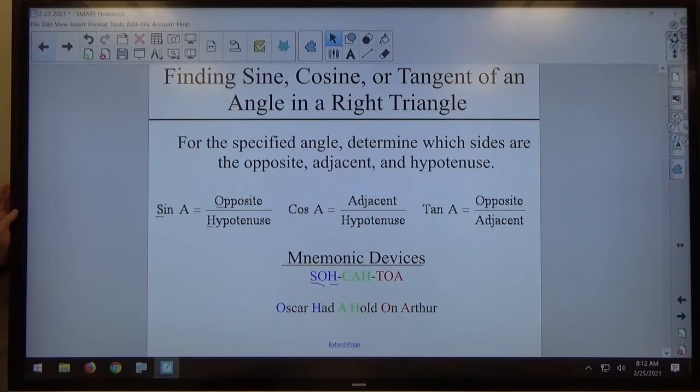So make sure that when you're creating a sine, cosine, or tangent statement, sine, cosine, or tangent of an angle equals a ratio of two sides.